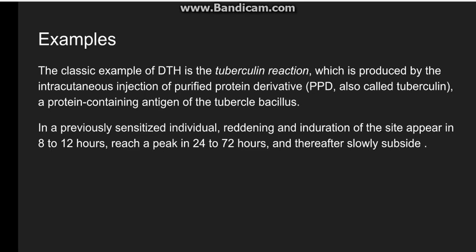A classic example of delayed type of hypersensitivity reaction is the tuberculin reaction. It is produced by intradermal injection of PPD, also known as tuberculin, derived from the tubercle bacillus. In a previously sensitized person — either by infection or vaccination — induration will appear, reaching a peak around 72 hours and then subsiding.